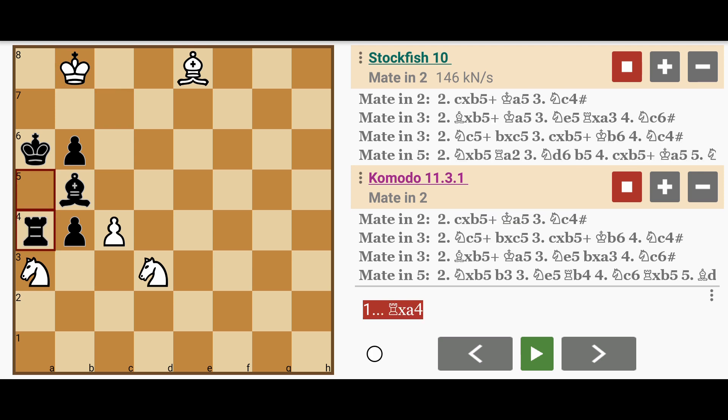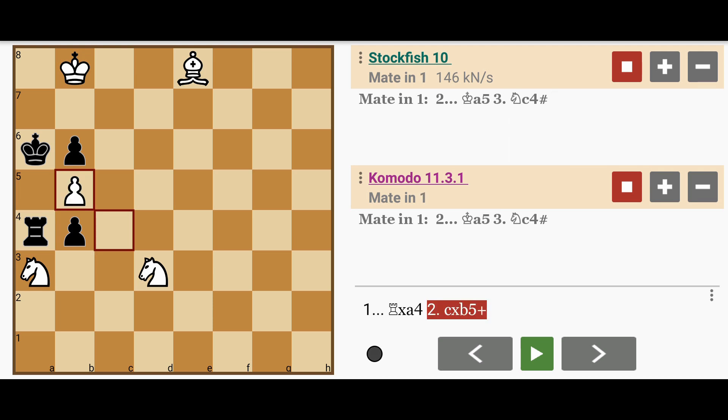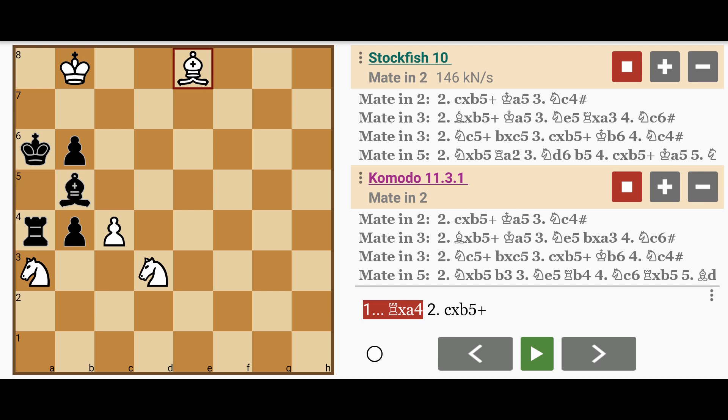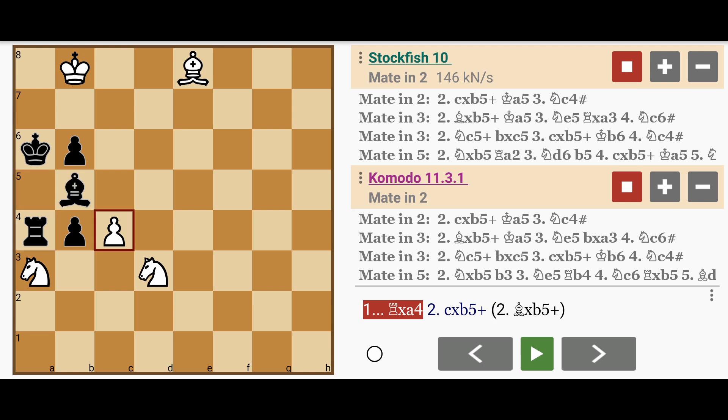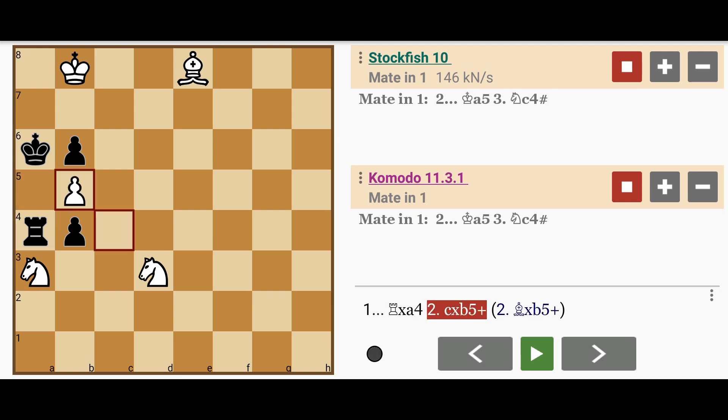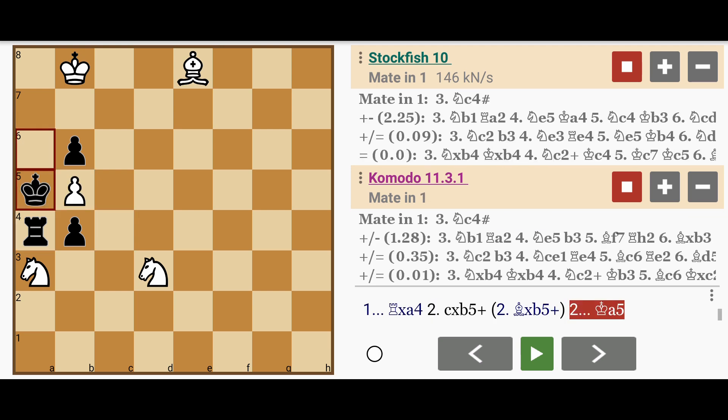And it would seem as if this solved the problem, but it makes way for another path to the checkmate, which is c captures b5 check. Now white has to be careful not to play Bishop captures b5, because this delays it a bit more. So c captures b5, and now there's only one move, King to a5.